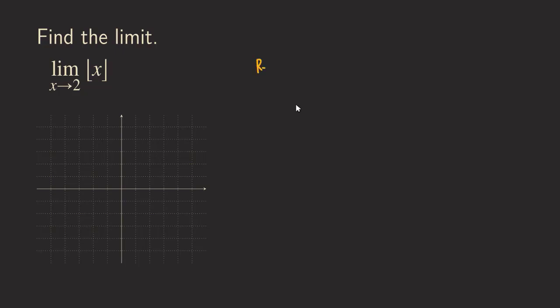First we are going to review how the floor function behaves. Let's say if we plug in a 2 in there, that's an integer. The floor function is also known as the greatest integer function. Whatever number that we plug in here, we are going to get an integer that is equal to or less than this number. So if this is an integer, then we are going to get the integer back.